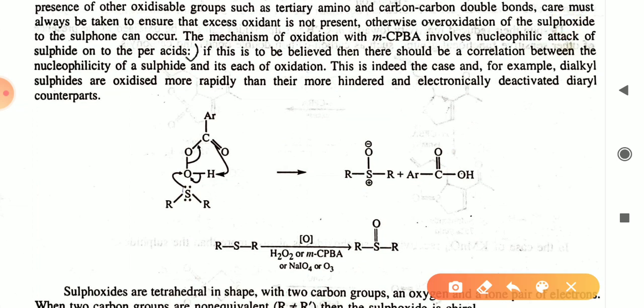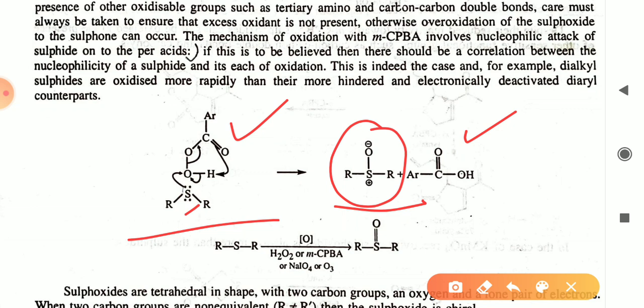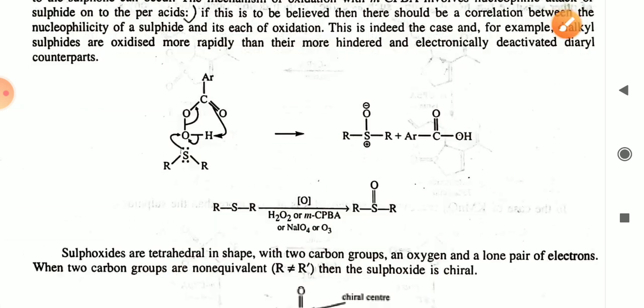The mechanism of oxidation by MCPBA involves a nucleophilic attack of the sulfide ion on the peracid. As you can see in the mechanism, the lone pairs on sulfur attack the peracid, and after bond rearrangement you get the R-S⁺-O⁻ intermediate along with ArCOH. With H₂O₂ or MCPBA you will get the sulfoxide.